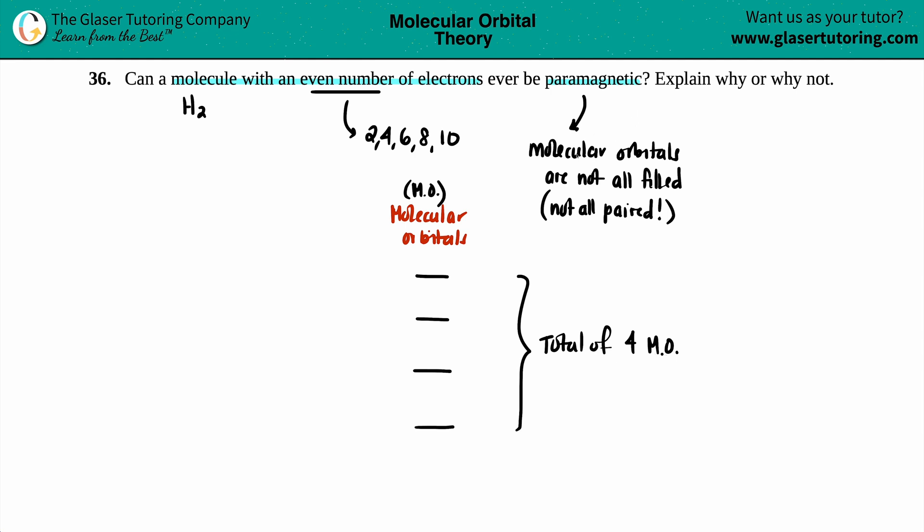Now, if it's paramagnetic, all those molecular orbitals, they can't all be filled, they can't all be paired. So meaning that if I have two electrons per each molecular orbital and all these are filled, this would be classified as diamagnetic, not para.